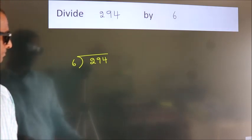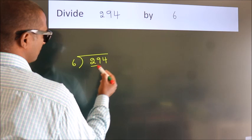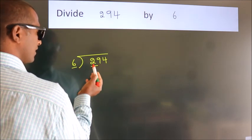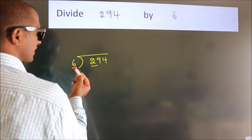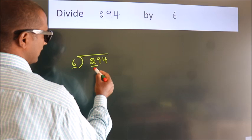Next, here we have 2. Here 6. 2 is smaller than 6. So, we should take 2 numbers.